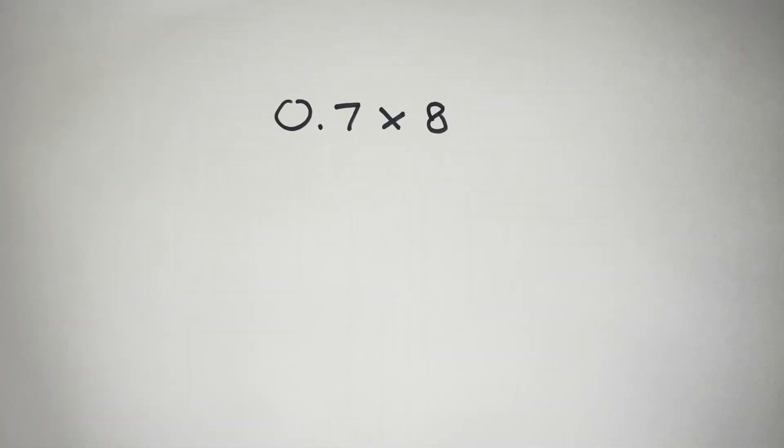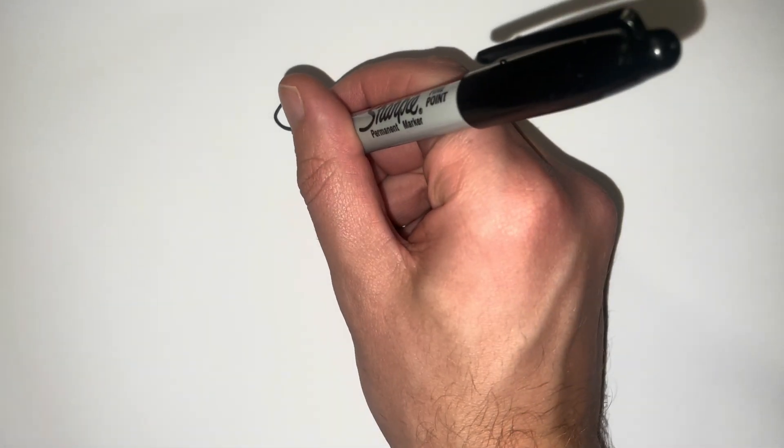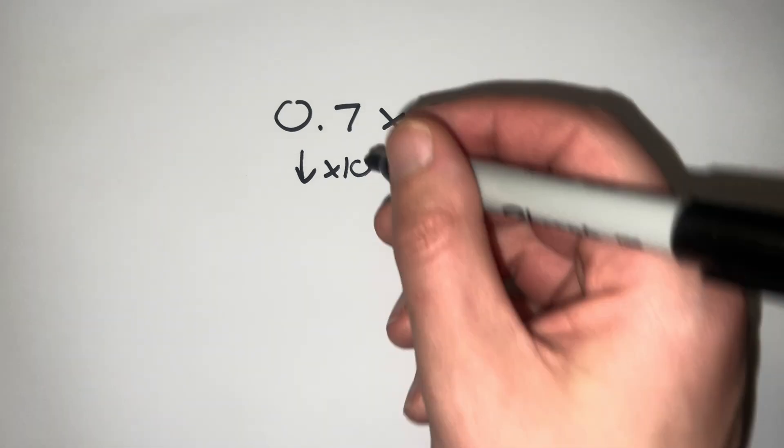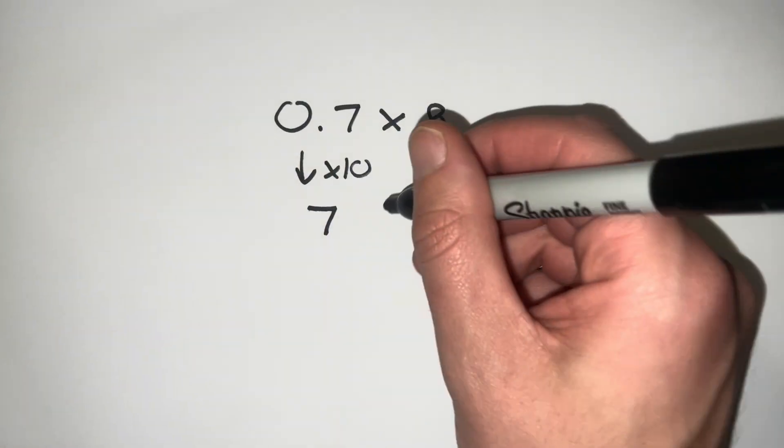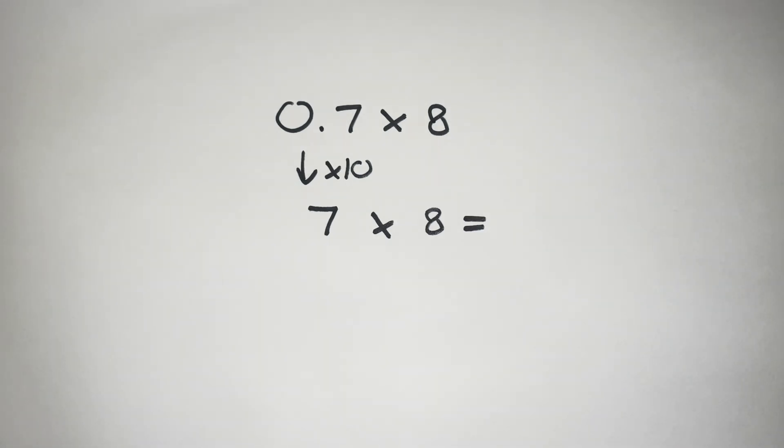If we take a look at another example, 0.7 times 8, again we can turn our numbers into whole numbers by multiplying this 0.7 by 10. If we multiply that by 10, that becomes 7, and our new calculation is 7 times 8. Now 7 times 8 is 56.